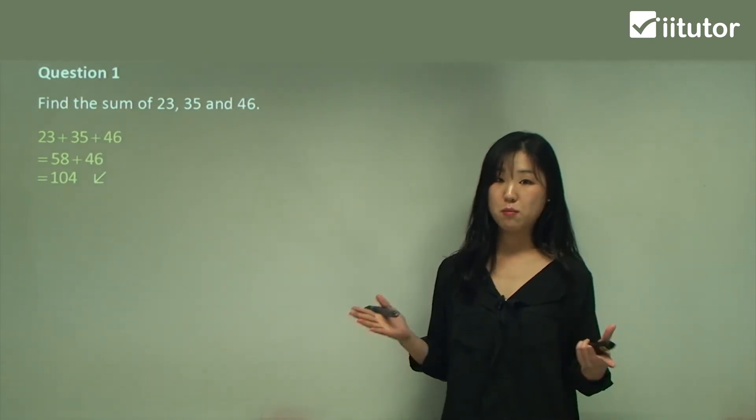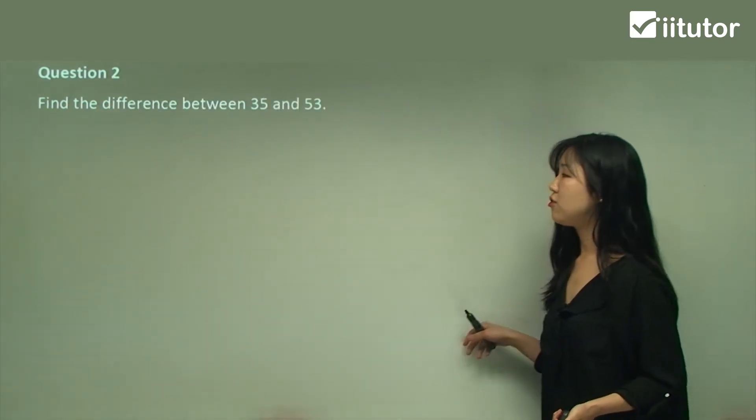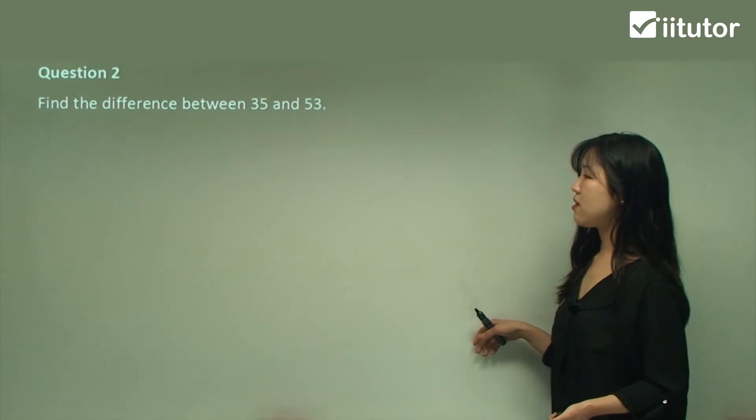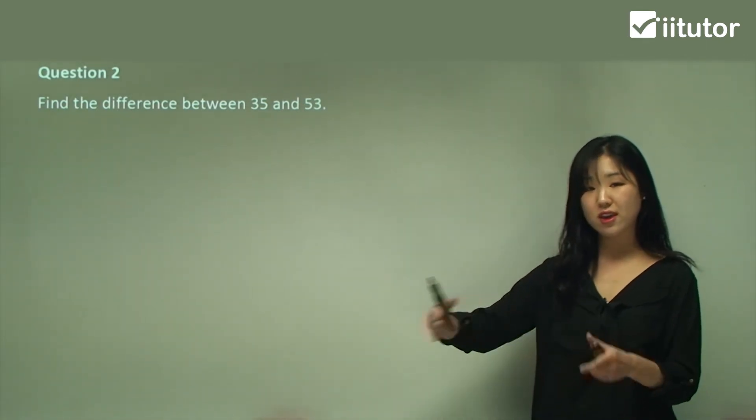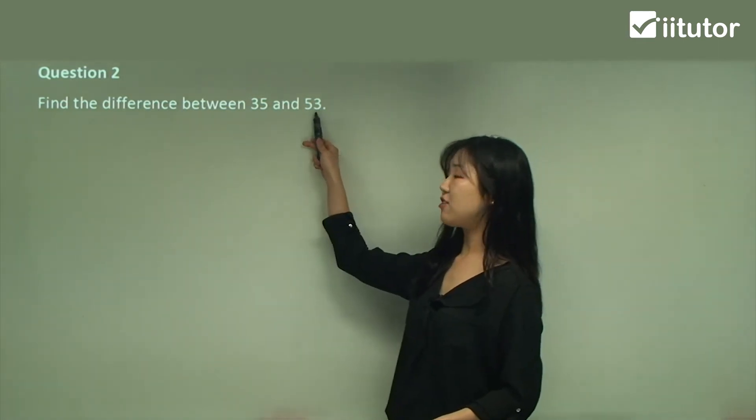Question two: find the difference between 35 and 53. If I want to find the difference, I want to know how much gap in between, right? So it's best to do the larger number minus the smaller number. 53 minus 35 is 18. Easy stuff.